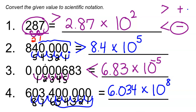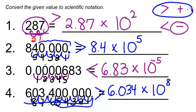Now we need to decide if that 8 is positive or negative. Our original number is much bigger than 6.034, so our exponent is going to be positive. Remember, we don't have to show a positive exponent.